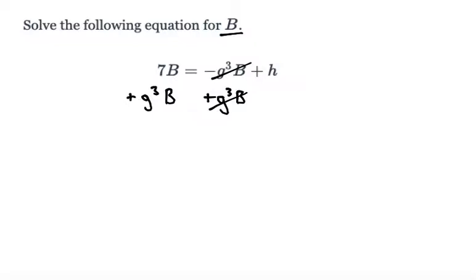We're left with the left hand side: 7b plus g cubed b equals everything on the right hand side, which is just h.